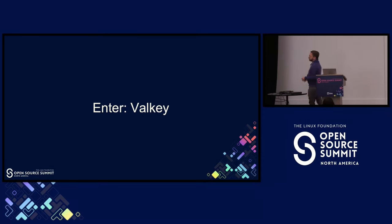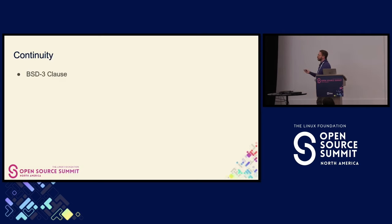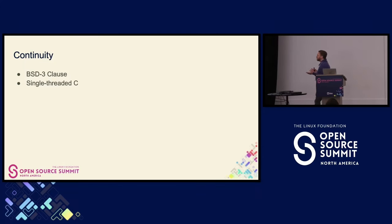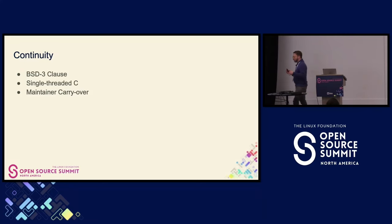First it was called Placeholder KV, which is a name that is inspired, and I kind of wish we had kept it. But Valky is a better name for the long term. Valky is a project that's about continuity. The first and probably most important thing is it continues the BSD 3-clause license — that was the license Redis had since the beginning. It continued how Redis was built: single-threaded C. And it has maintainer carryover — the people from that core group. Three organizations were involved, two of which have gone to Valky.